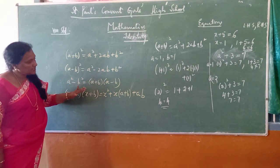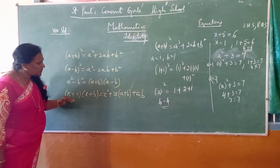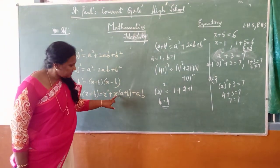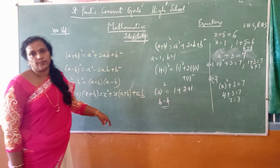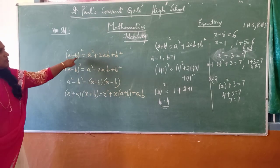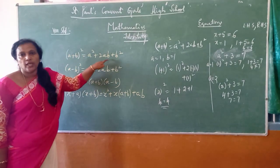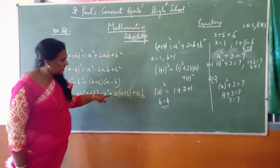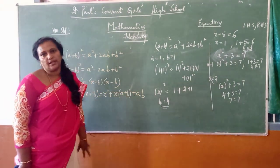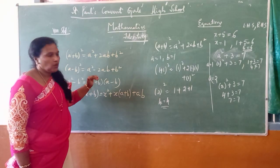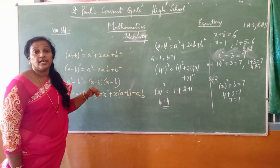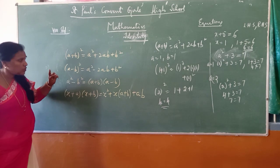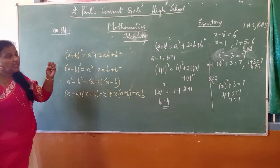Identity 3: A squared minus b squared is equal to a plus b into a minus b. Identity 4: x plus a into x plus b is equal to x squared plus x into a plus b plus ab. Therefore, you have to learn these identities by heart. When a problem is given, you should know which identity to apply. You should be able to identify, recognize, and solve the problem.